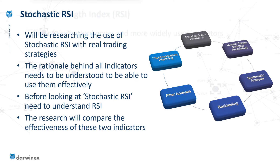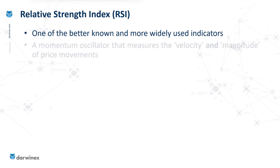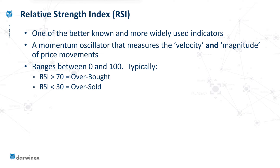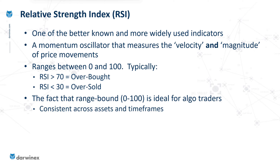RSI is probably one of the most used and discussed indicators there are, and this is what's known as a momentum oscillator. That's because it measures both the velocity and the magnitude of price movements. Conveniently for algo traders, this is normalized to a range of between 0 and 100. Typically higher values — either a level of 70 or above, or 80 and above — are what are classified as overbought. The reason it's convenient for algo traders when we have a range bound like this is that it doesn't matter which assets we're trading or which timeframes we're trading in; the indicator will always range between those same values. And that's not the case for all indicators, so this helps to keep code consistent regardless of what we're trading.